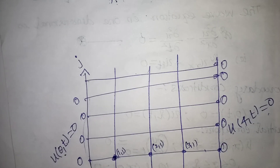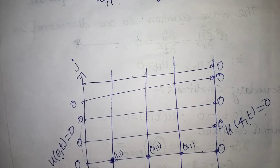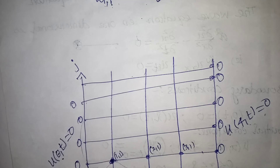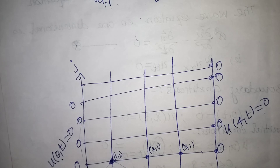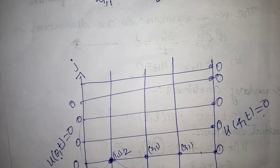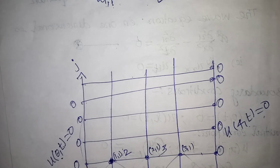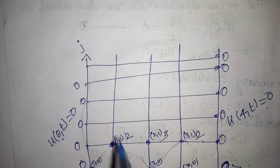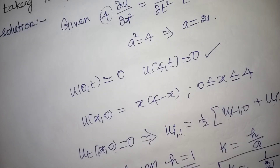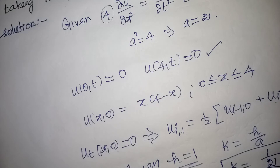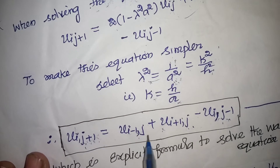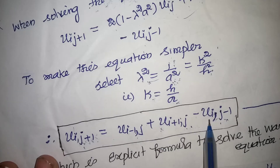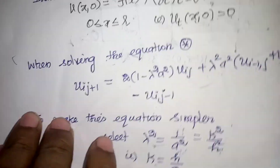Using the explicit formula u(i,j+1) = u(i−1,j) + u(i+1,j) − u(i,j−1), we now compute successive time levels. Applying the formula at each interior grid point using the established values from j=0 and j=1.